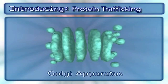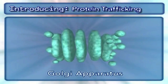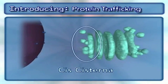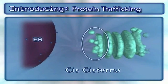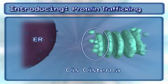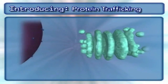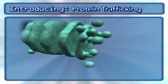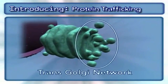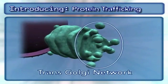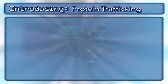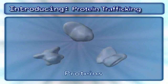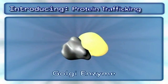The Golgi apparatus consists of general components: the cis-cisterna nearest the endoplasmic reticulum, or ER, the medial and trans-cisternae, and the trans-Golgi network. Other key players in this process are the proteins being transported and the enzymes that modify them.